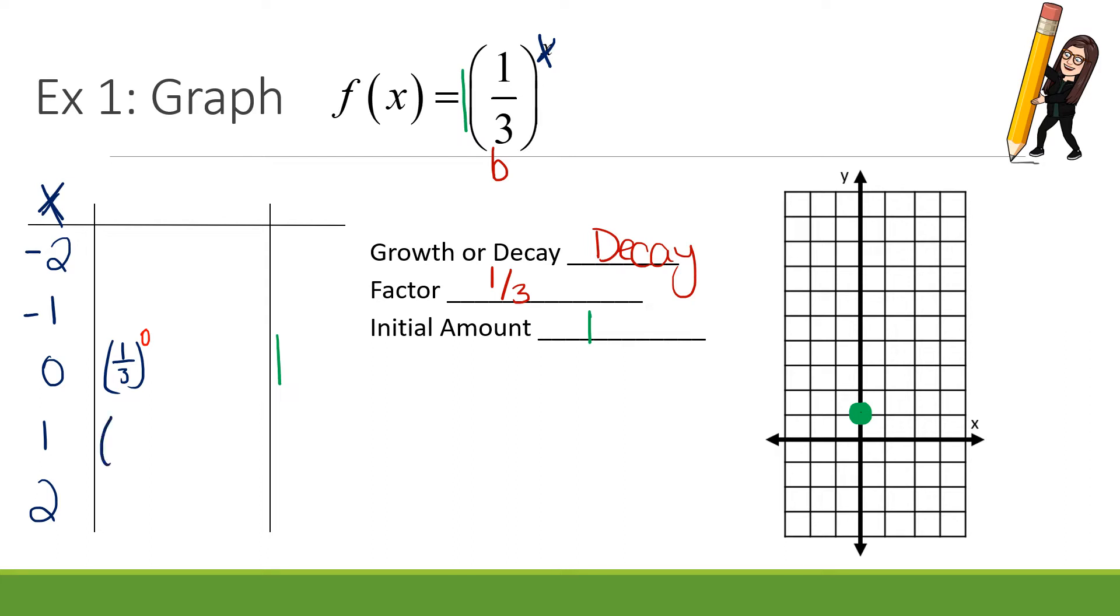Let's try another one. Let's go positive. 1 third to the positive first power. Well, anything to the first power is itself. So I'm going to have 1 third. So write 1 over a third. Yes, you're going to have to graph fractions. Just make an estimation.